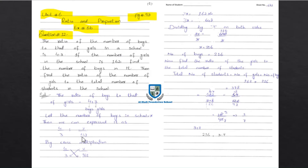This ratio was given. By cross multiplication: 4 multiplied by 162 and x multiplied by 3. So 3x = 4 × 162 = 648. Therefore 3x is equal to 648.